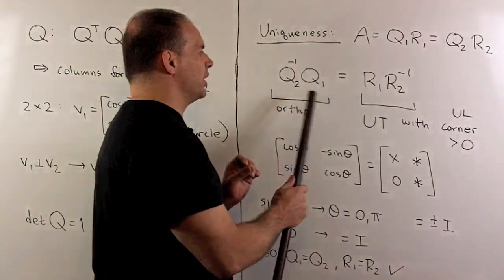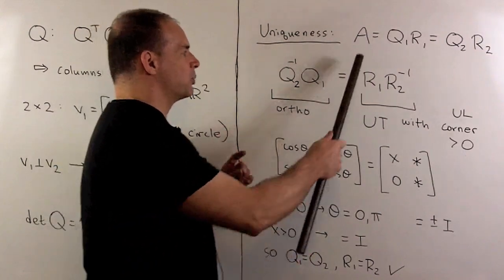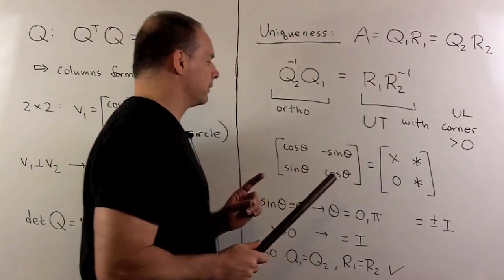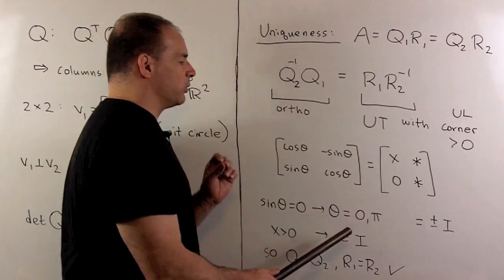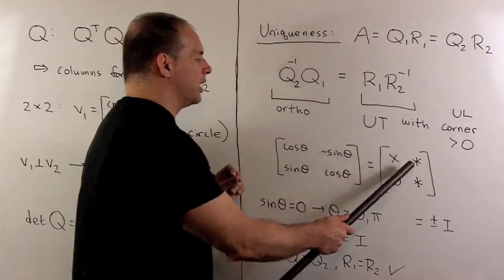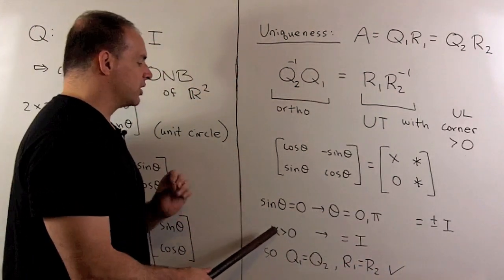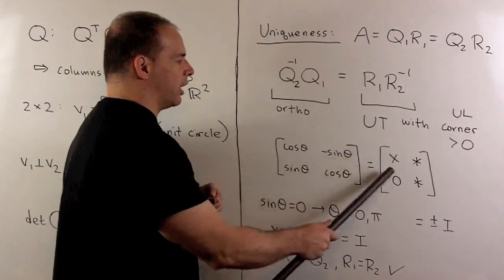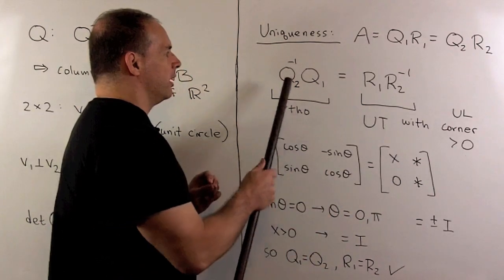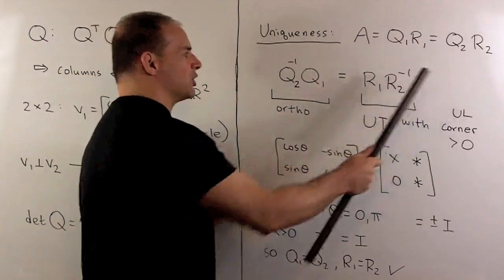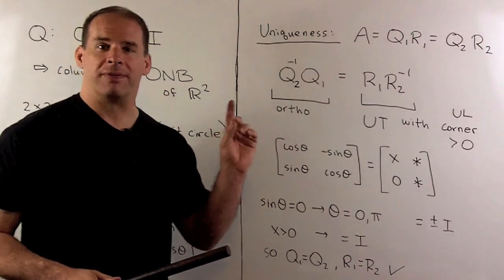If these two matrices are equal, then the product is in the rotation form with X positive. That forces sine of theta equal to 0, so theta equals 0 or pi. Since X is greater than 0, the upper left-hand corner entry is positive, meaning we're looking at the identity matrix for both. Therefore Q1 equals Q2 and R1 equals R2, so our factorization is unique.